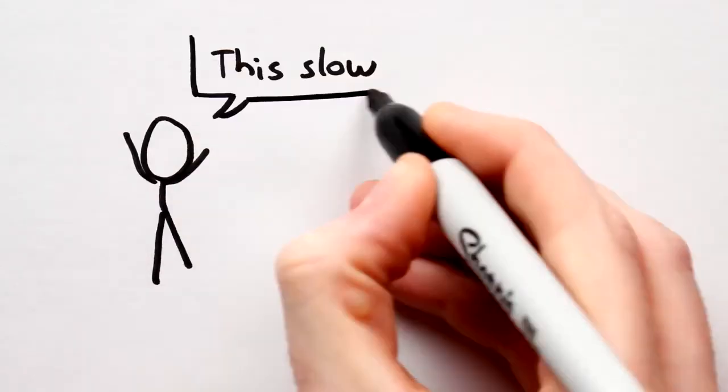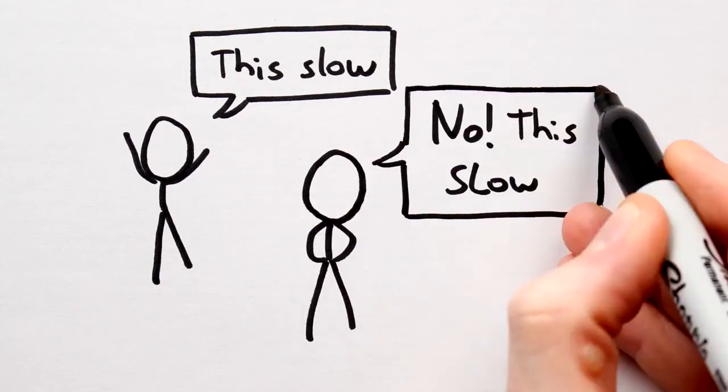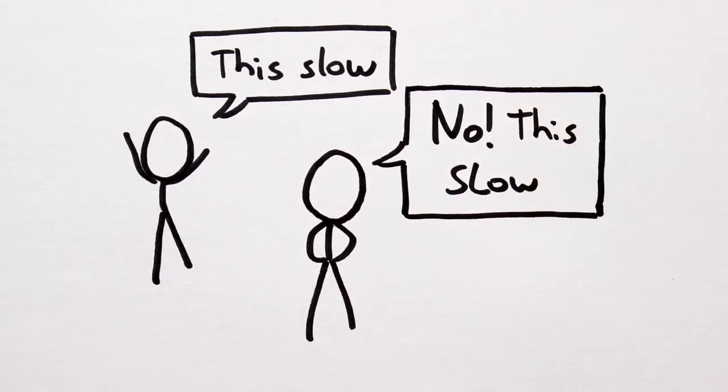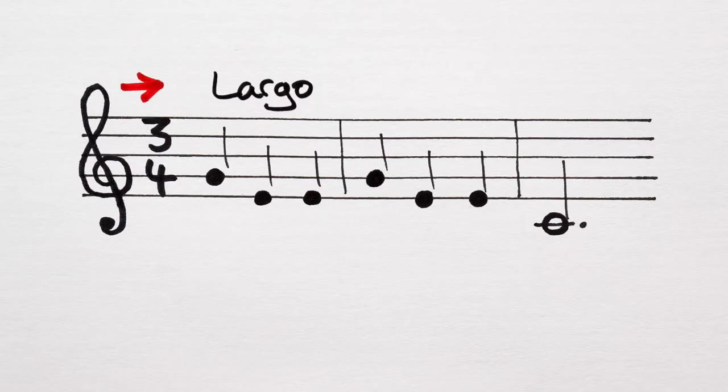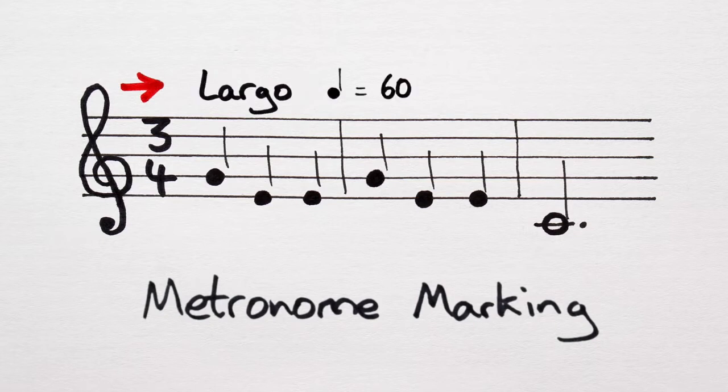Now, my idea of what, say, largo is, may be totally different to what your idea of largo is. So, if a composer wants to be absolutely sure that their piece is played at a very exact tempo, they might decide to add in a metronome marking, like so. This particular metronome marking tells us that there are 60 crotchet beats per minute.